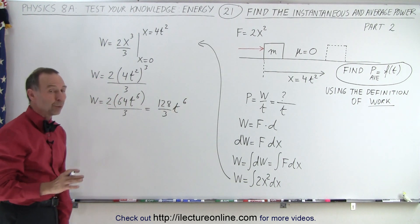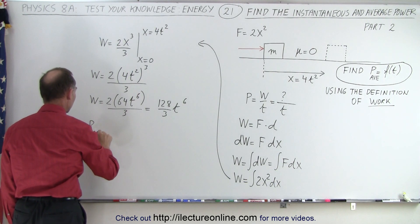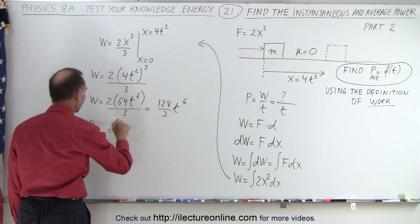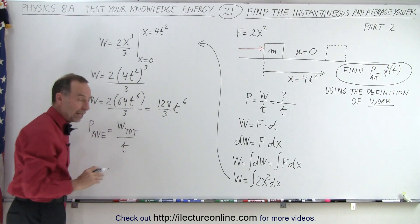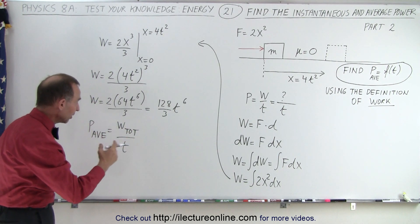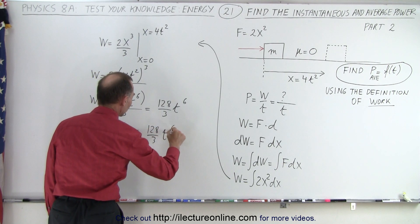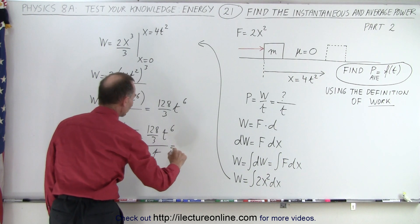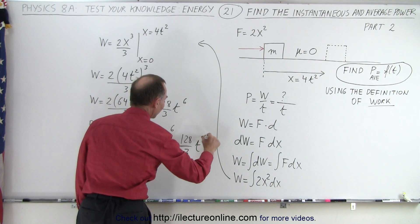Of course, that would be the total work done. And that means that the average power can be defined as being equal to the total work divided by the time that it took to do that. And of course, that would be from 0 to t, which means that this is equal to 128 over 3 t⁶ divided by t, which is equal to 128 divided by 3 t to the fifth power.